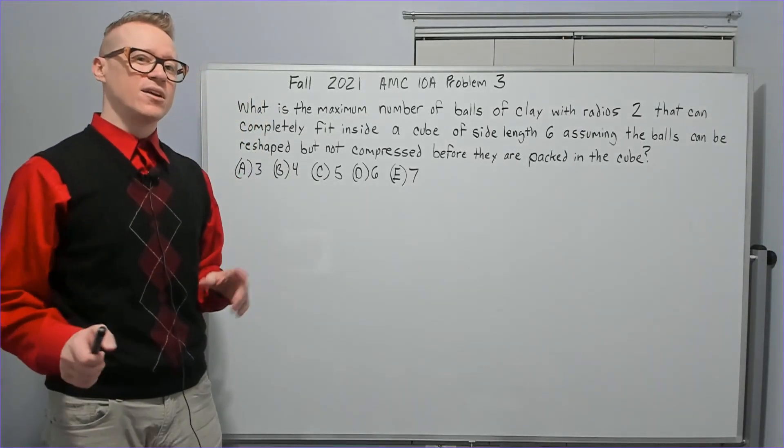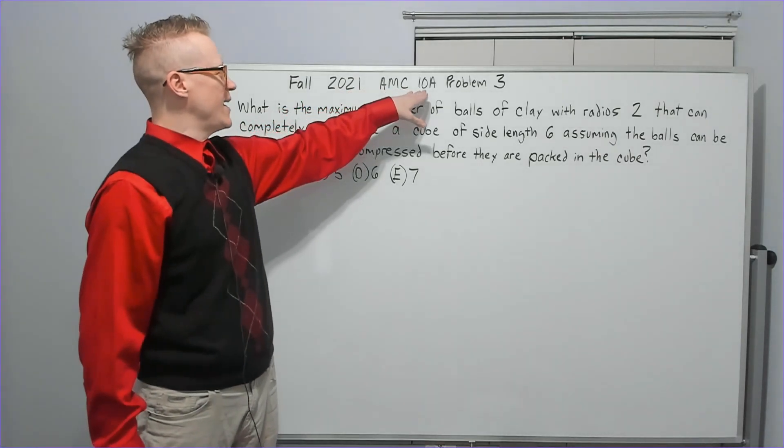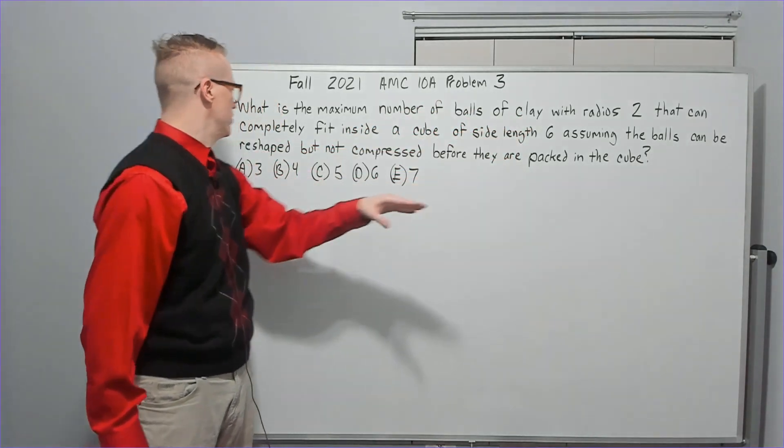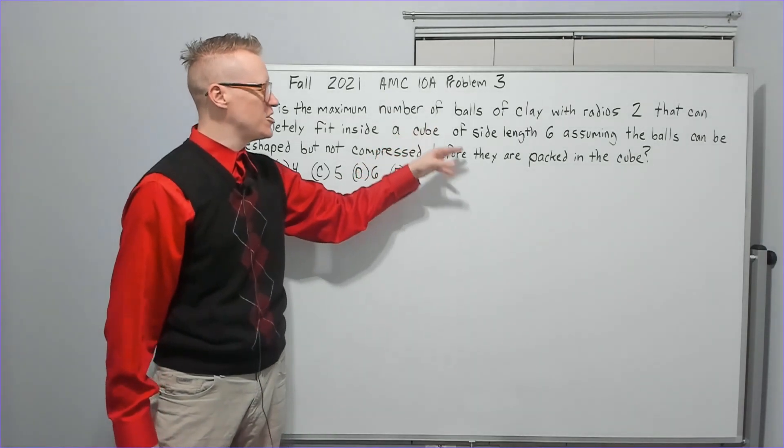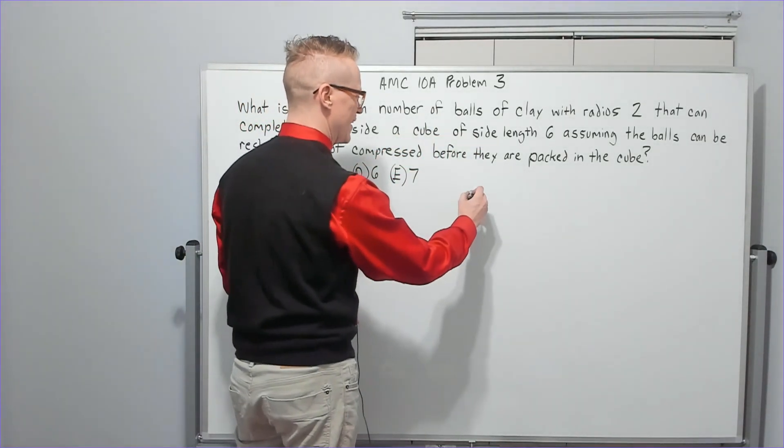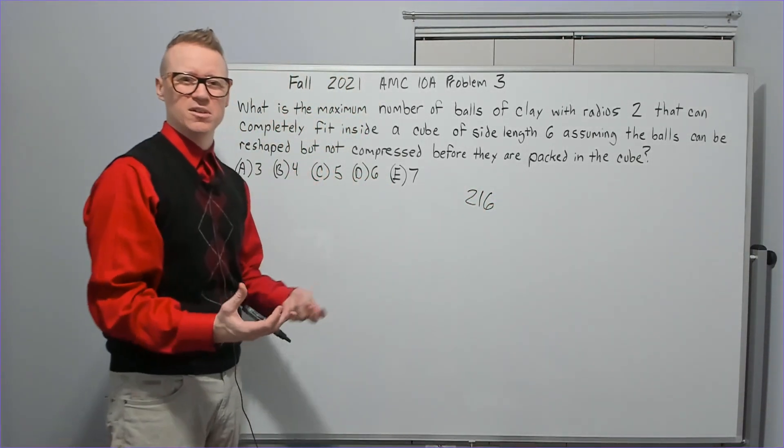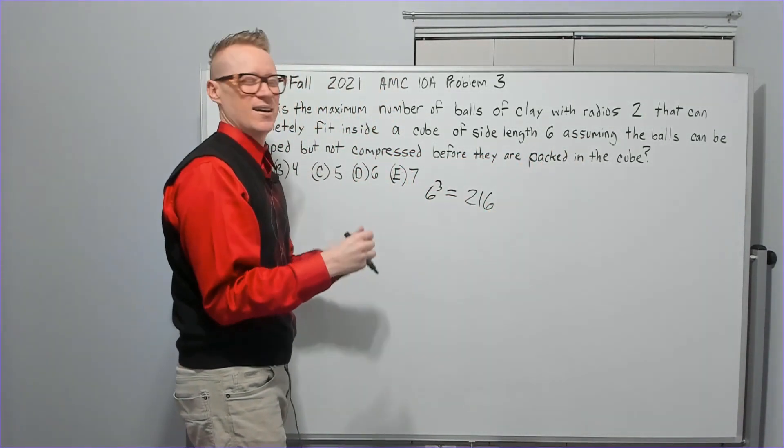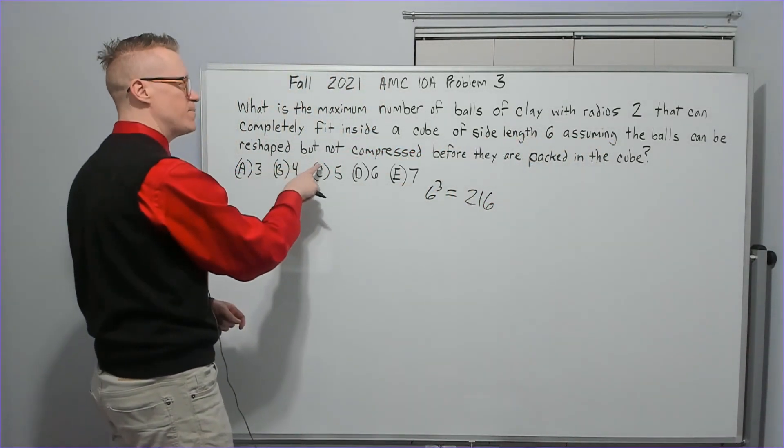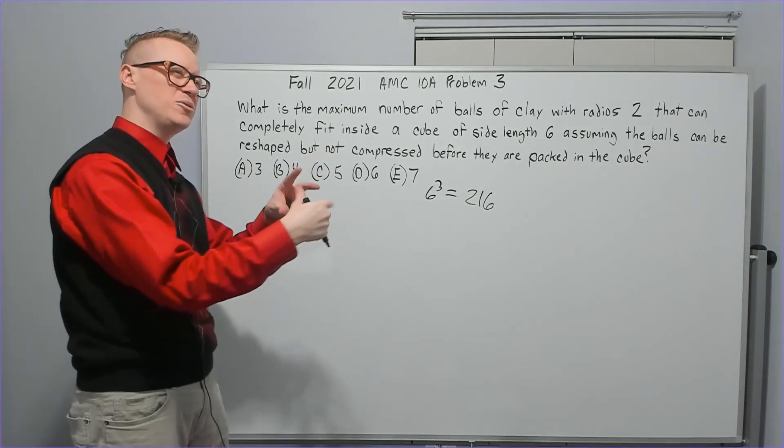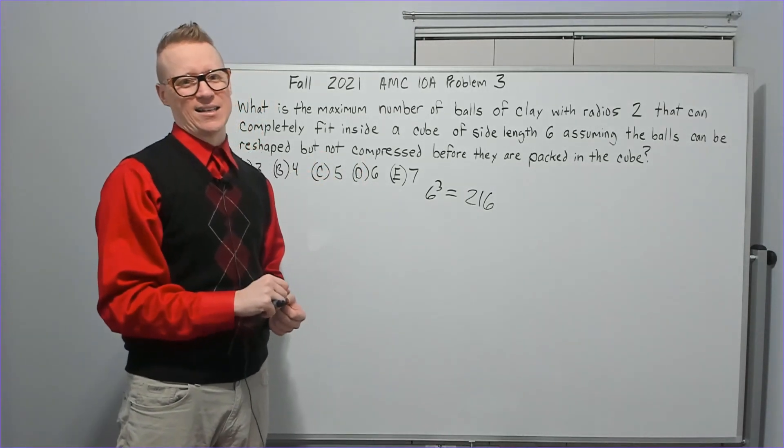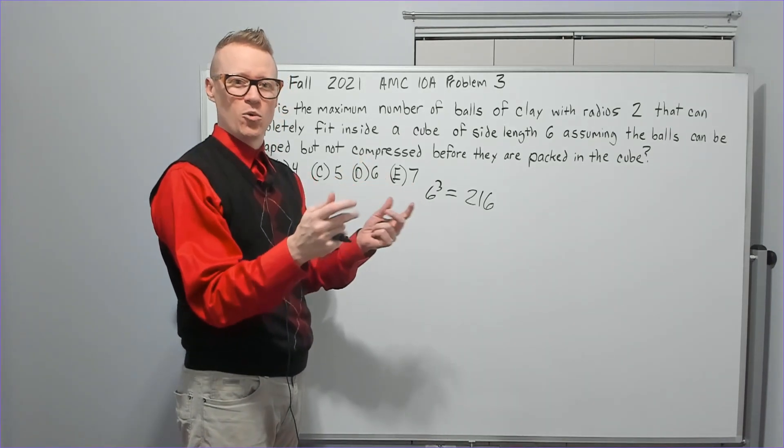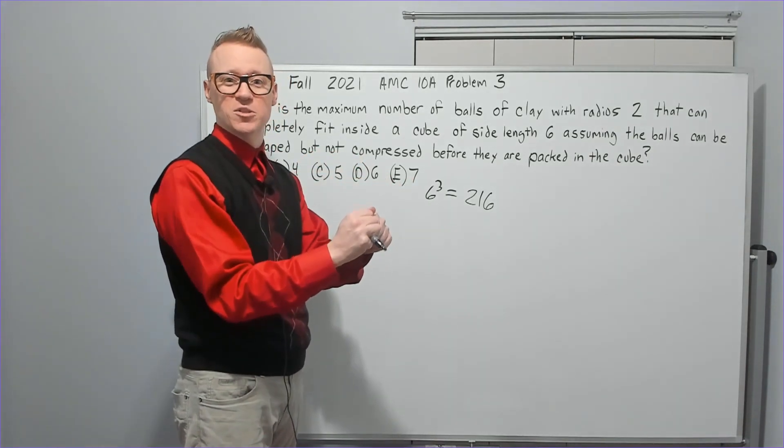And now the first problem that was different on the two tests, this is the 2021 AMC 10A problem three. What is the maximum number of balls of clay with radius two that can completely fit inside a cube of side length six? Cube of side length six is 216. Notice they don't give dimensions like inches, centimeters. Nobody cares. Assuming the balls can be reshaped but not compressed. What does that mean? Compressed means shrunk down in size, like density kind of thing. You can't do that.